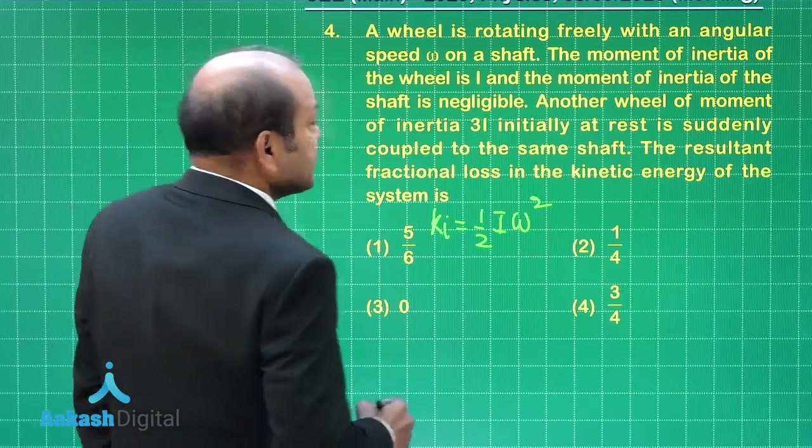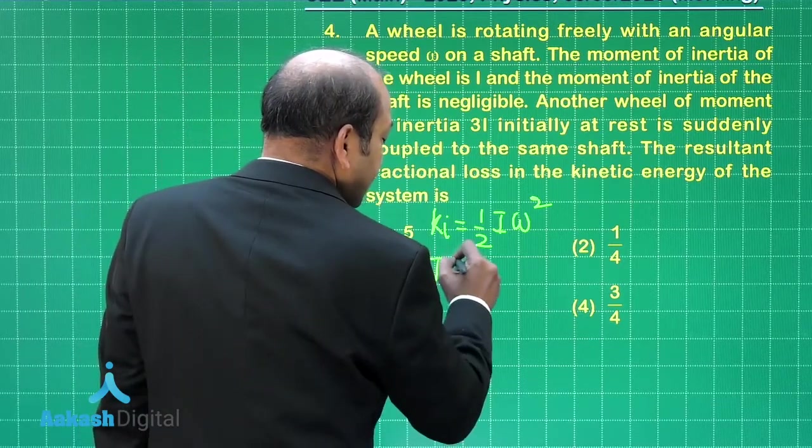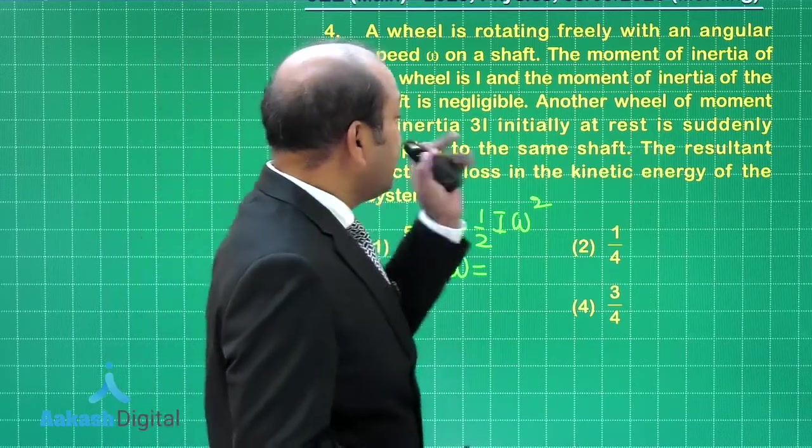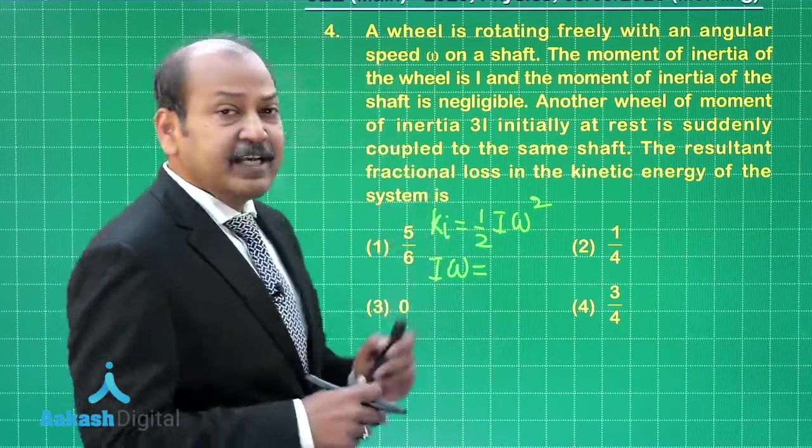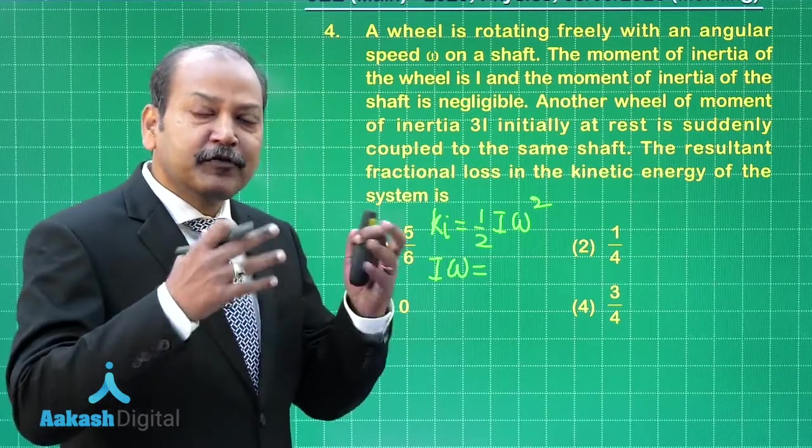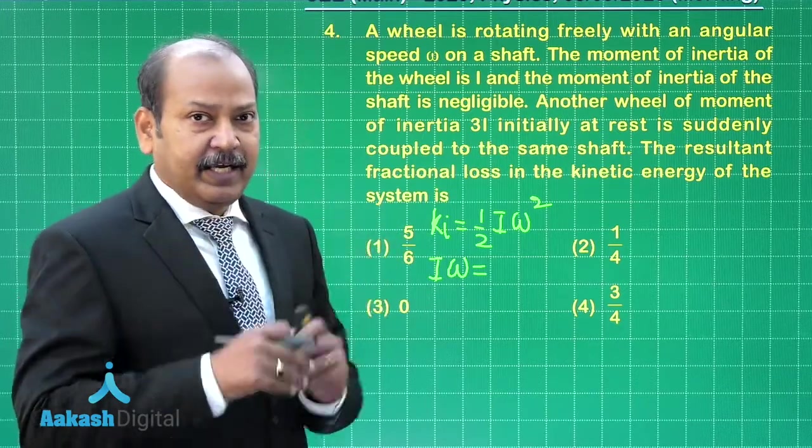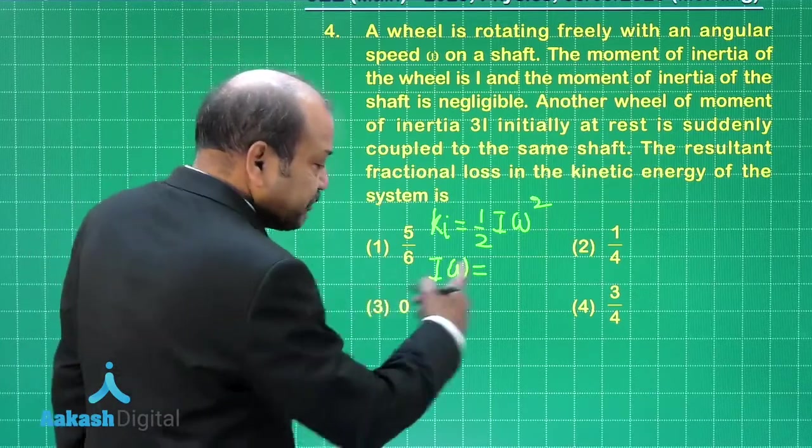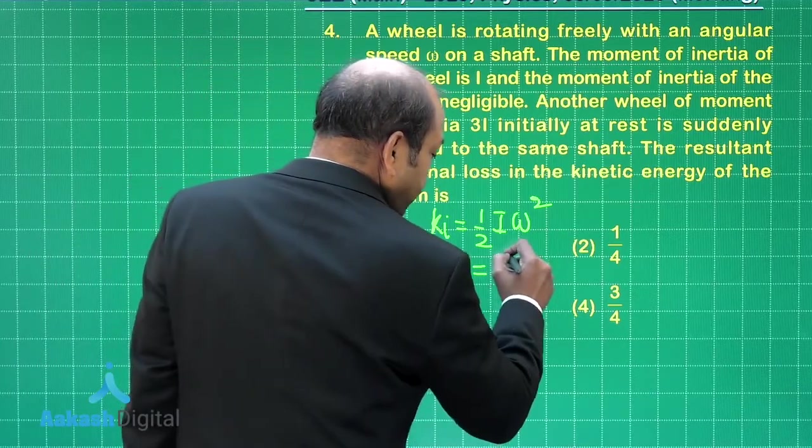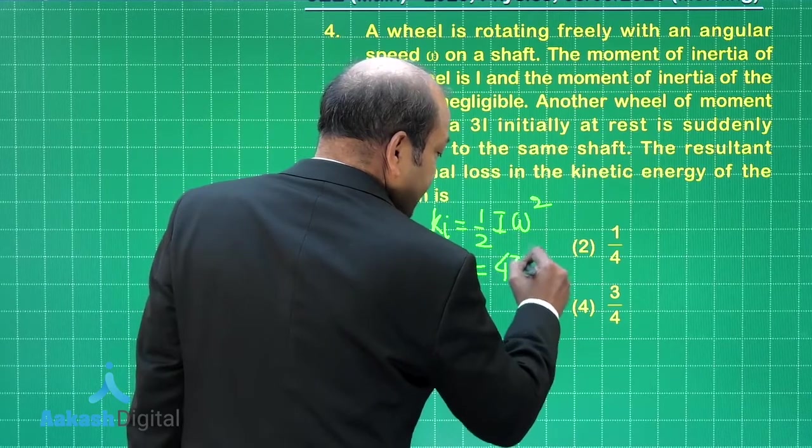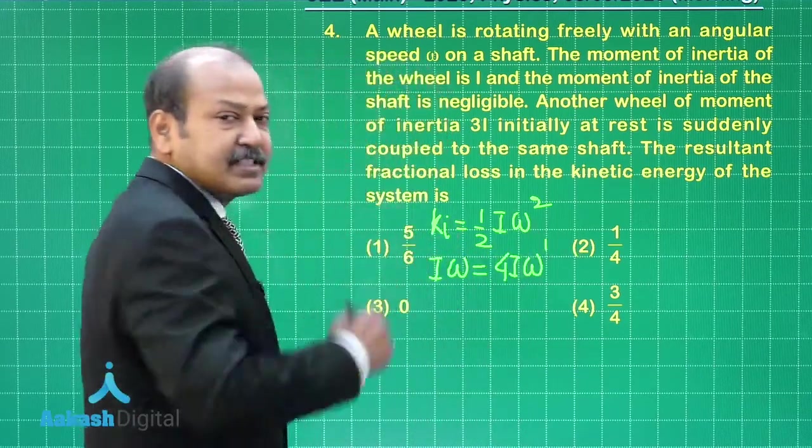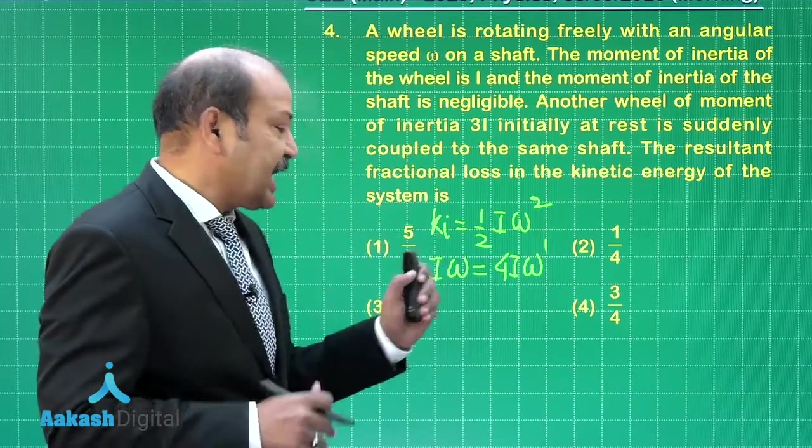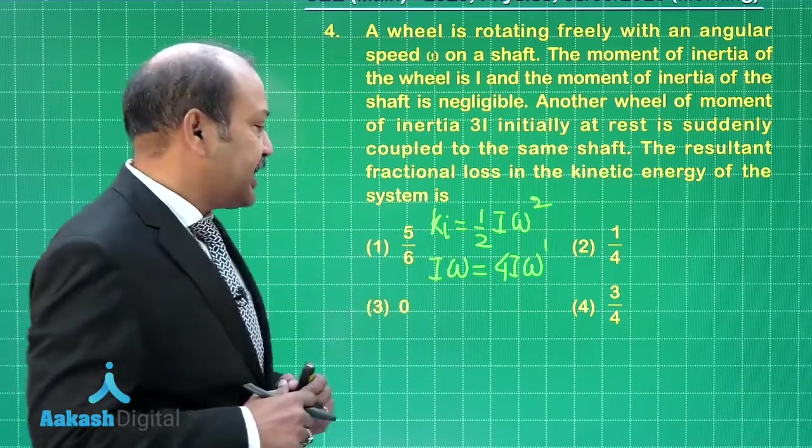The initial angular momentum was I into omega, and after the wheel of moment of inertia 3I is coupled, the total moment of inertia becomes 4I and the final angular speed is omega dash. So I omega equals 4I into omega dash. This gives us omega dash equal to omega divided by 4.